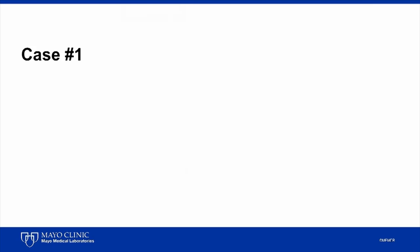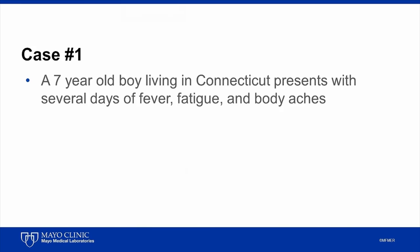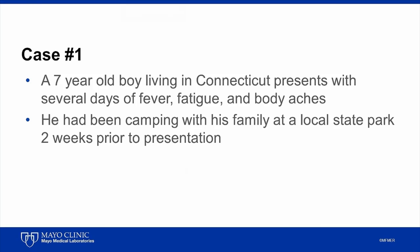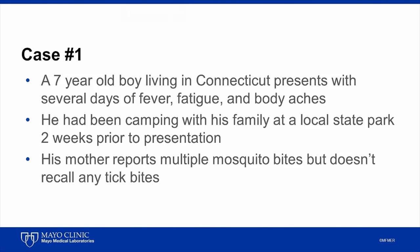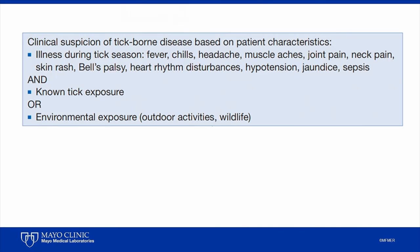Now let's move on to our cases. Case number one is a seven-year-old boy living in Connecticut who presents with several days of fever, fatigue, and body aches. He had been camping with his family at a local state park two weeks prior to presentation, and his mother reports multiple mosquito bites but doesn't recall any tick bites. No rash was noted. If we go to our algorithm, we can determine our next steps. The algorithm starts with the clinical scenario — in this case, a clinical suspicion of tick-borne disease based on patient characteristics.